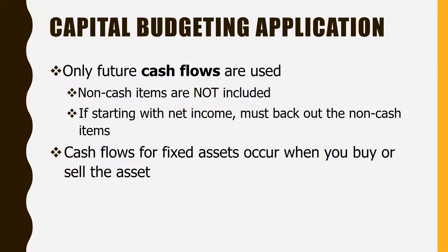That's just expensing the amount over the period of time you're using it, for matching on your income statement. But it's not a cash flow. For capital budgeting, you always use future cash flows. So depreciation expense, which is a non-cash item, is not included. If a problem starts you out with net income, you'll have to back out those non-cash items — add back the depreciation because it didn't use up any cash. The cash flows for fixed assets occur when you buy or sell the asset. If you counted a cash flow when you bought the asset and also had depreciation, you'd be double counting — the car really only cost you $50,000.